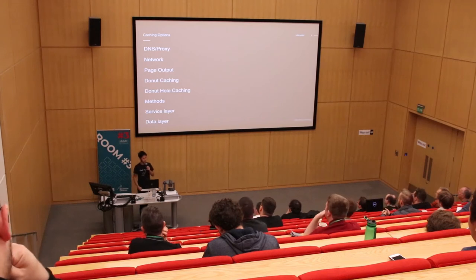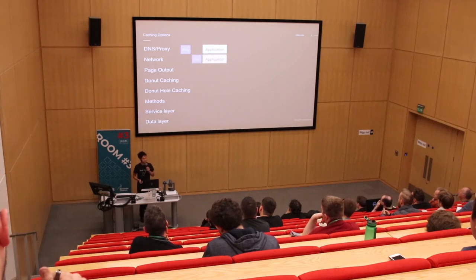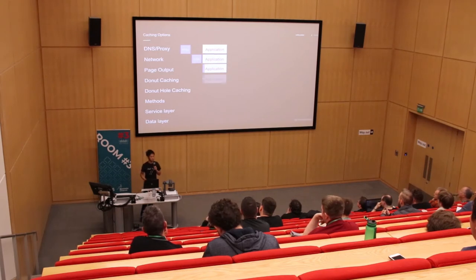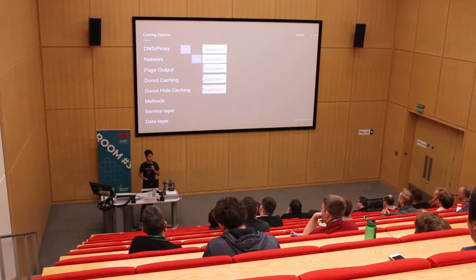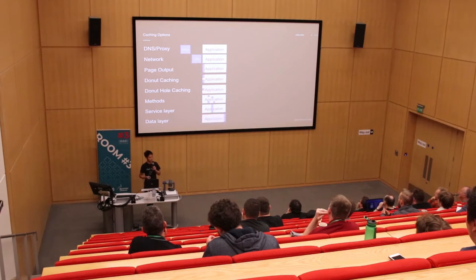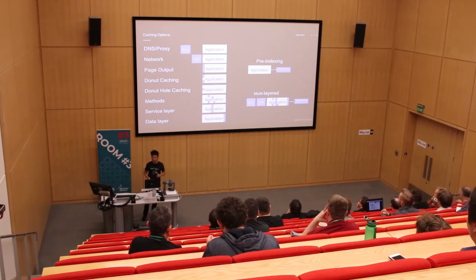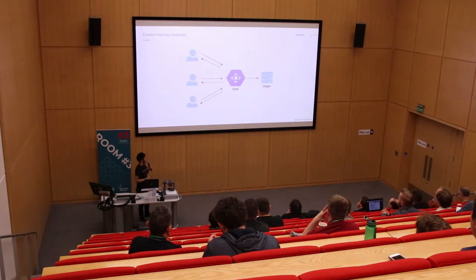A few different types of caching methodologies we're going to look at: there's DNS level, so Cloudflare for instance; CDNs; you may want to output cache your HTML; donut caching - caching everything except something; donut hole caching - caching just something on the page; method level caching; service level caching in your application; maybe the data layer; pre-indexing; or a multi-layered solution.